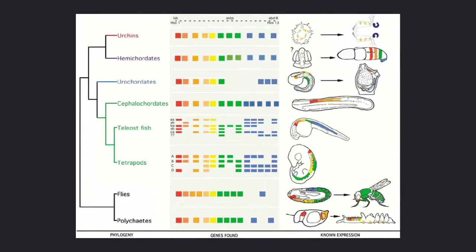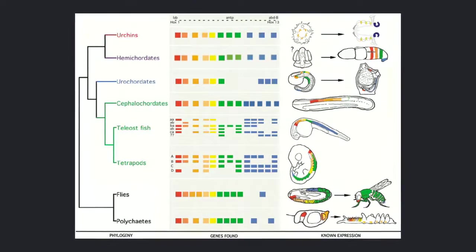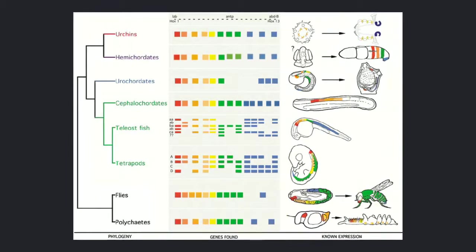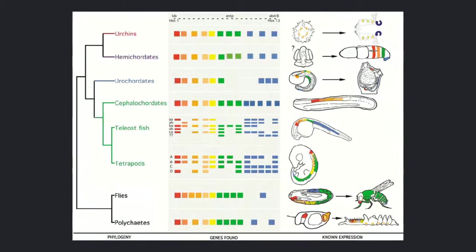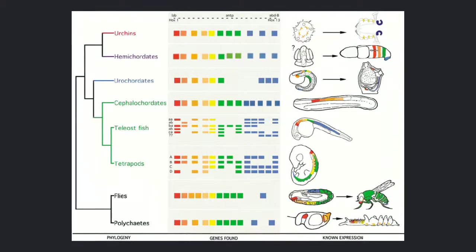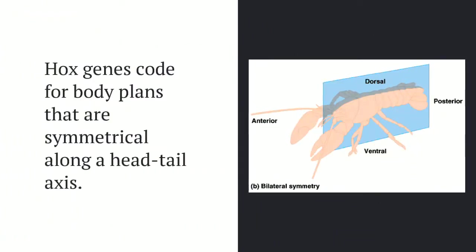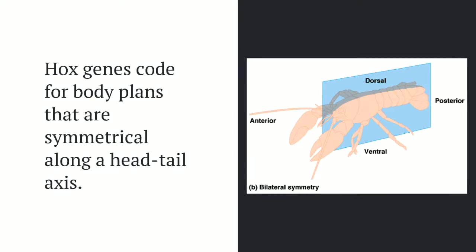Here's an image to show that clustering. You can see in different organisms they all share this pattern where the Hox genes are really close to each other and they almost correspond linearly to different segments of the organism's bodies. Hox genes play a crucial role in the head-to-tail axis bilateral symmetry that you see in a lot of organisms, everything from human beings to spiders. It all originates with the Hox genes coding for organisms to have these symmetrical, organized bodies.